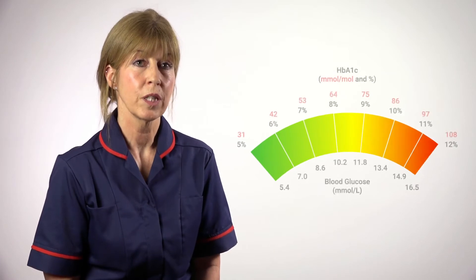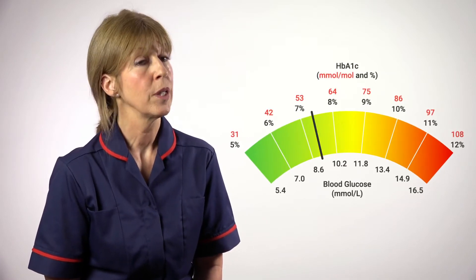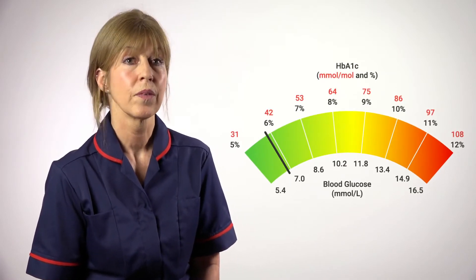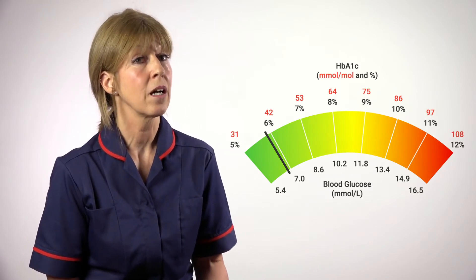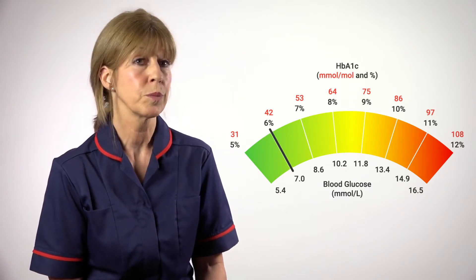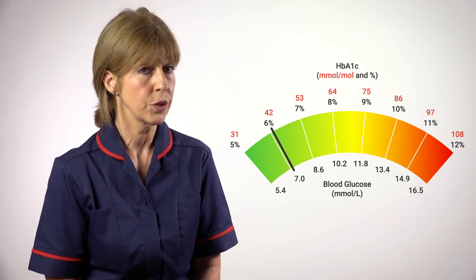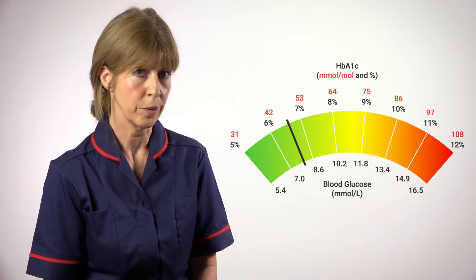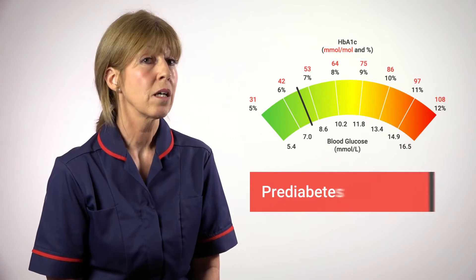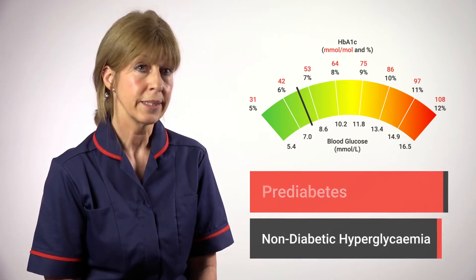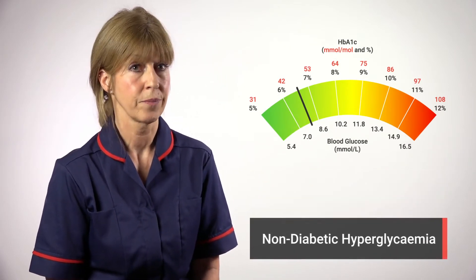A normal HbA1c result is a reading below 41 millimoles per mole. A person would be classed as high risk of diabetes if their result was between 42 and 47 millimoles per mole. This is classed as pre-diabetes or non-diabetic hyperglycemia.